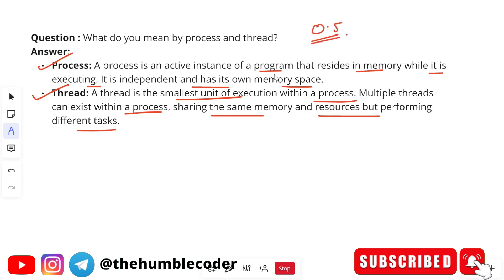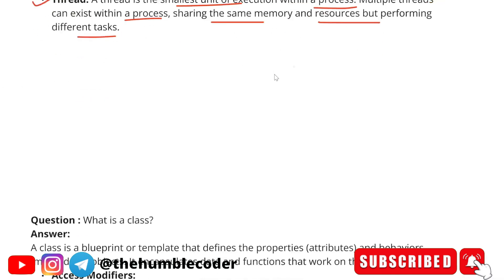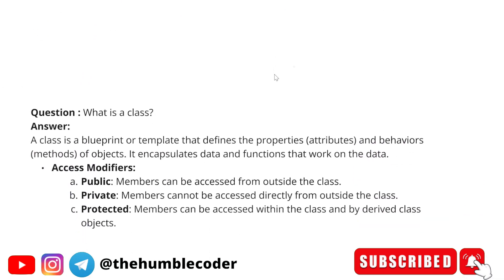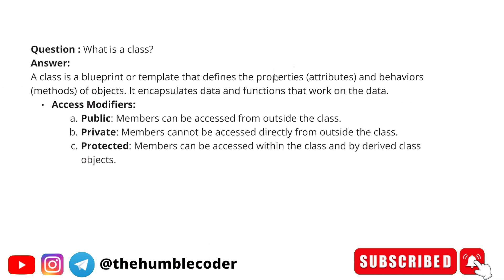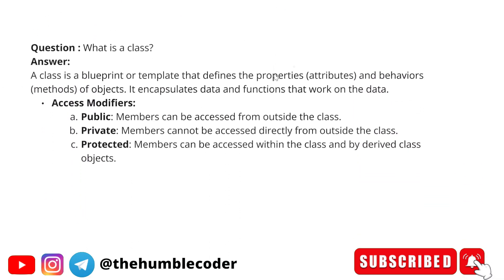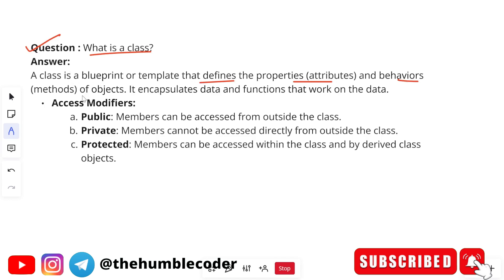A thread is the smallest unit of execution within a process. Multiple threads can exist within a process, sharing the same memory and resources but performing different tasks. These types of questions from different subjects you can expect. Let's see the next question: what is a class? A class is a blueprint or template that defines the properties and behaviors — behaviors being the methods of objects. It encapsulates data and functions that operate on that data.